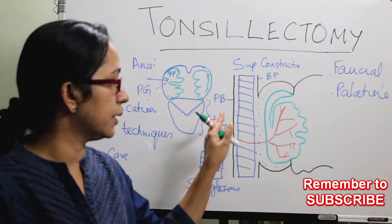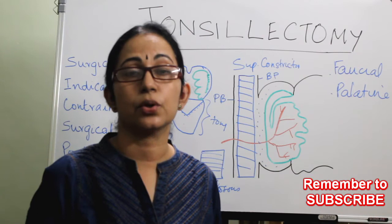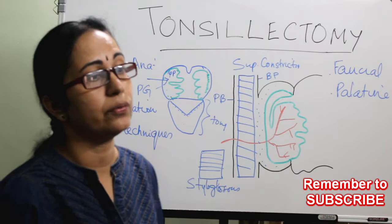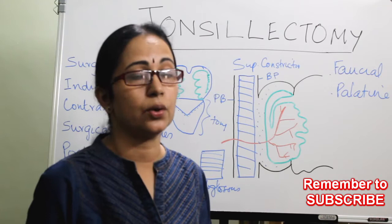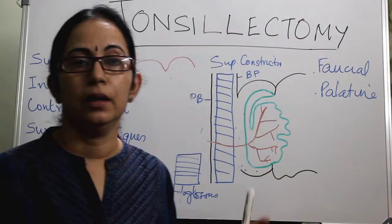This loose areolar tissue is also the site of collection of pus in the case of a peritonsillar abscess, or quinsy. So the importance of the loose areolar tissue is twofold: first, it is the plane of dissection in tonsillectomy; and second, it is the site of pus collection in quinsy or peritonsillar abscess.